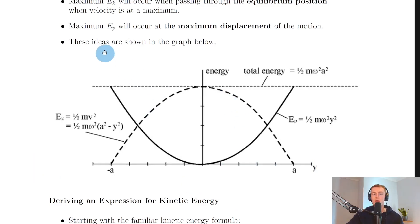Going back to the notes now, it says that these ideas are shown in the graph below. So if we plot energy on the y-axis against displacement y on the x-axis, and if we look at this dashed line first of all, then we can see we've got maximum energy at a displacement of zero.